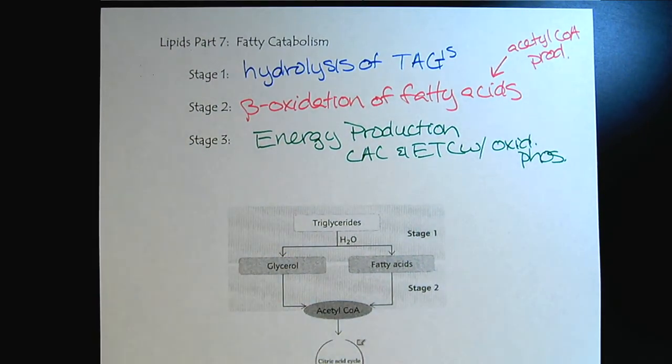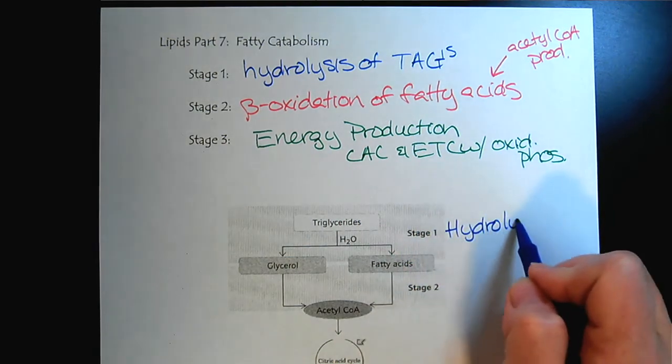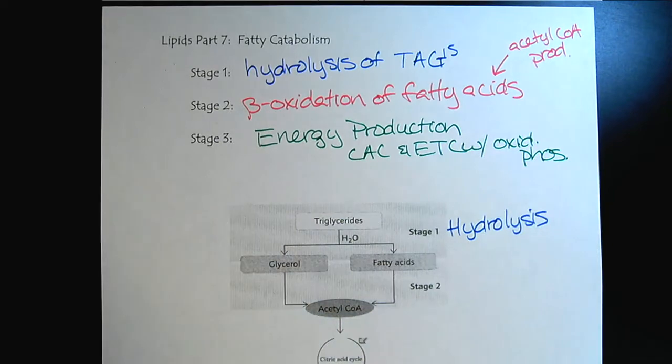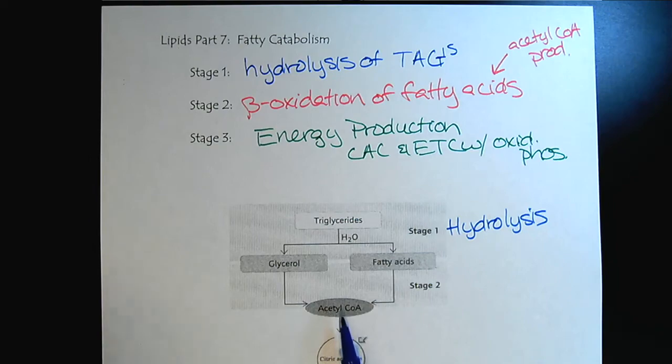Now we'll look at our schematic. So here's stage 1, where we have hydrolysis. Recognizing that the triglycerides will hydrolyze into glycerol and the fatty acids. So the glycerol will follow its own path to form acetyl-CoA.